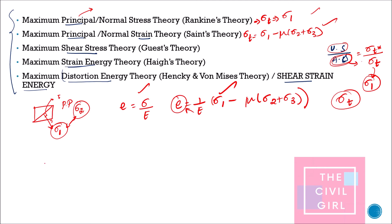Next is maximum shear stress theory. The maximum shear stress formula is: tau_max = (sigma_1 − sigma_2) / 2.